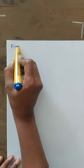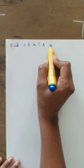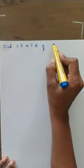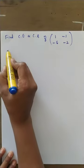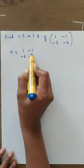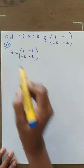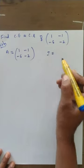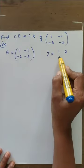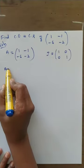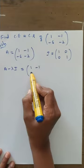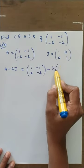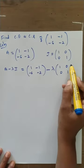Take one more example. Find the characteristic equation and characteristic roots of the matrix 1, minus 1, minus 6, minus 2. Take this matrix as A. The identity matrix I of the same order is 1, 0, 0, 1. Find the characteristic matrix A minus lambda I.